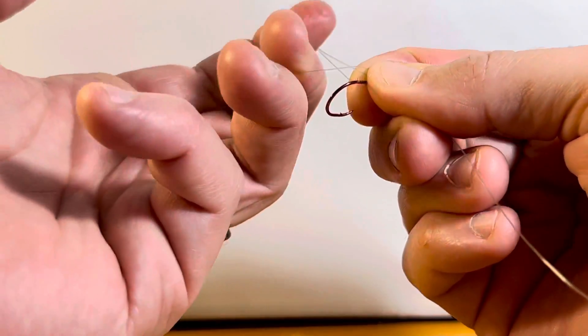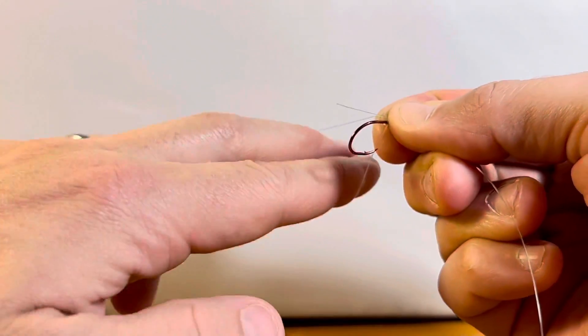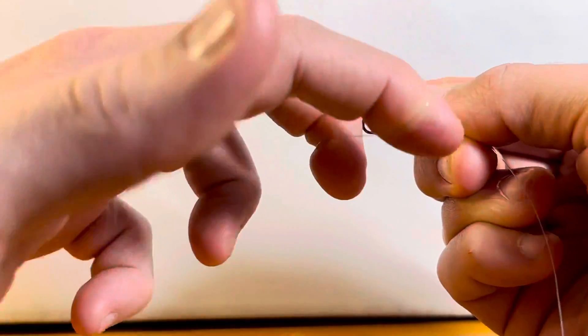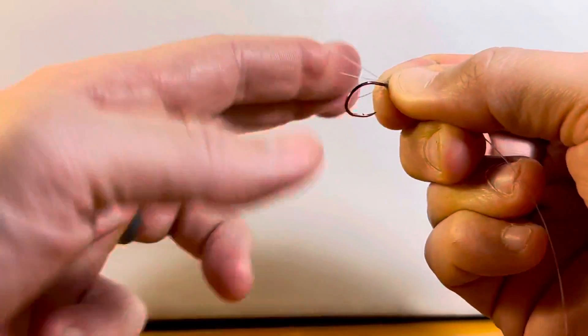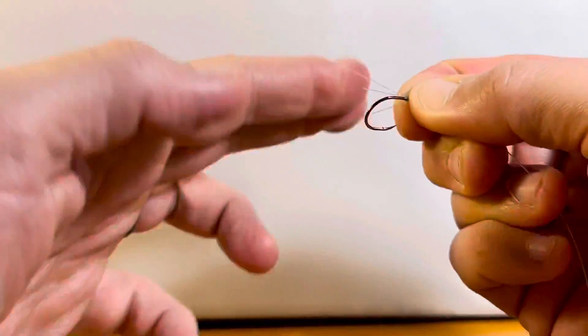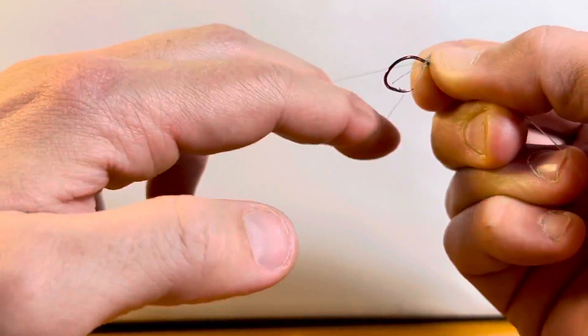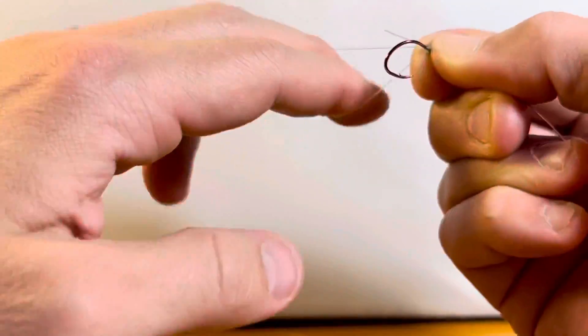We go down and then we start making our wraps and switching our fingers trapping that main line and that tag end in each wrap. Two, three, four, and I'm going slowly so you can see it. Five, six, and seven.